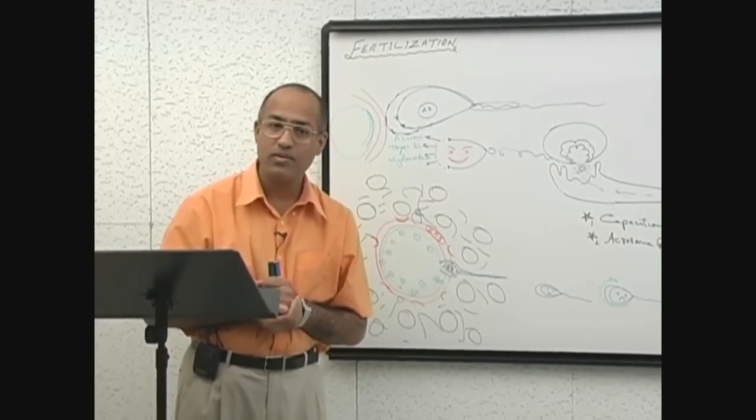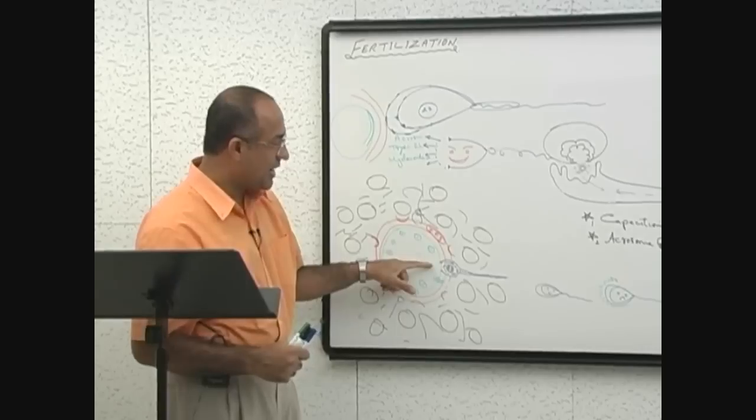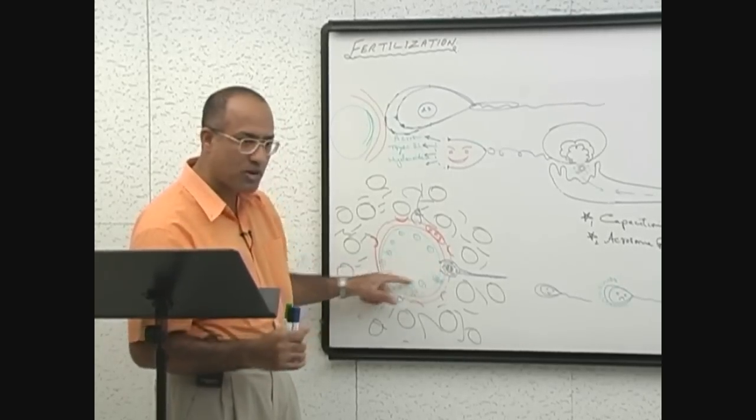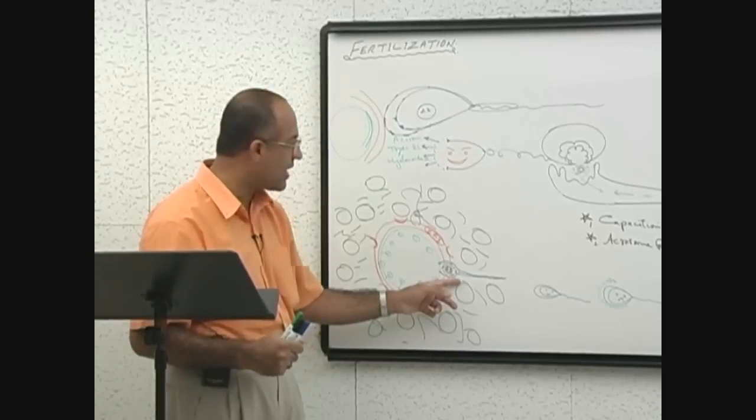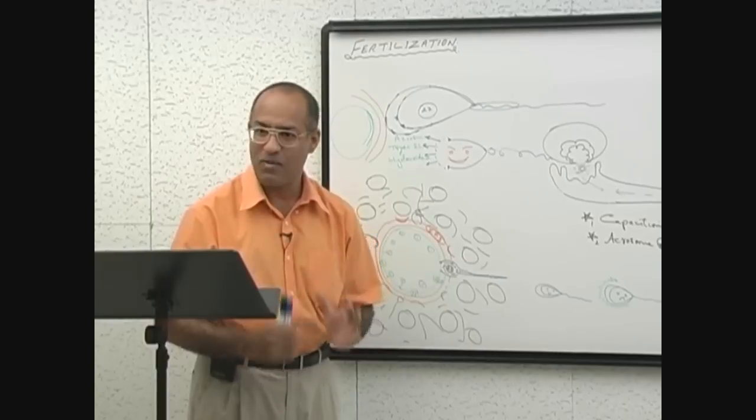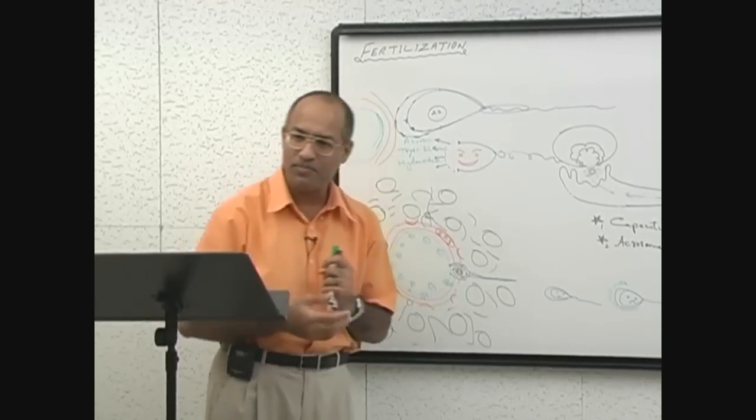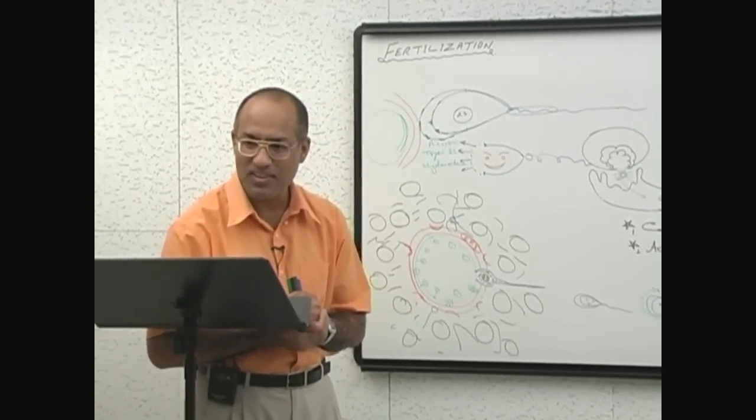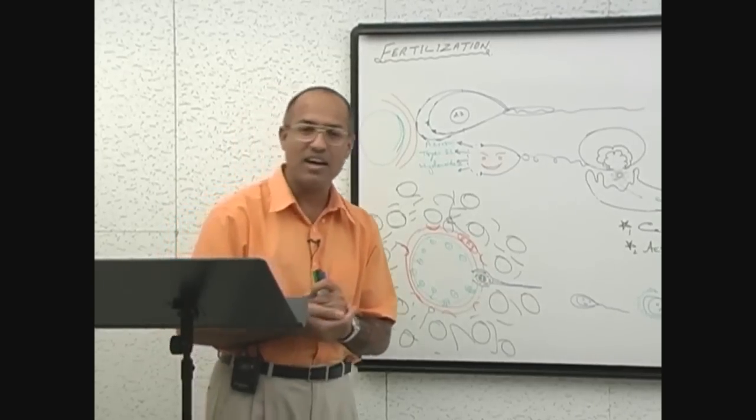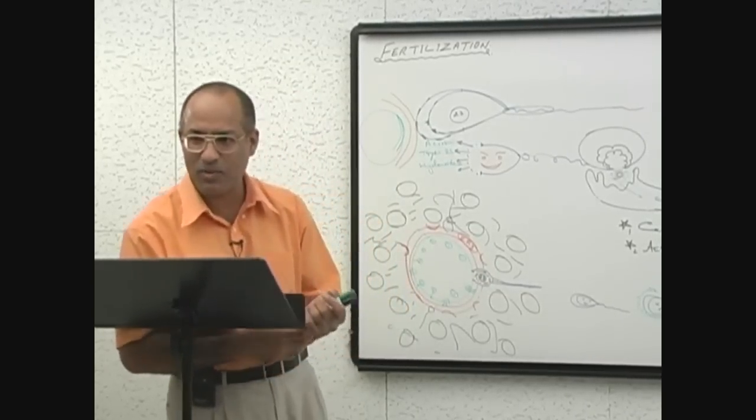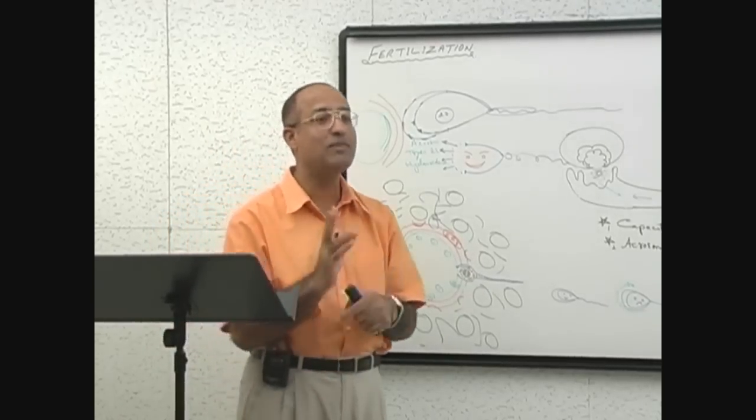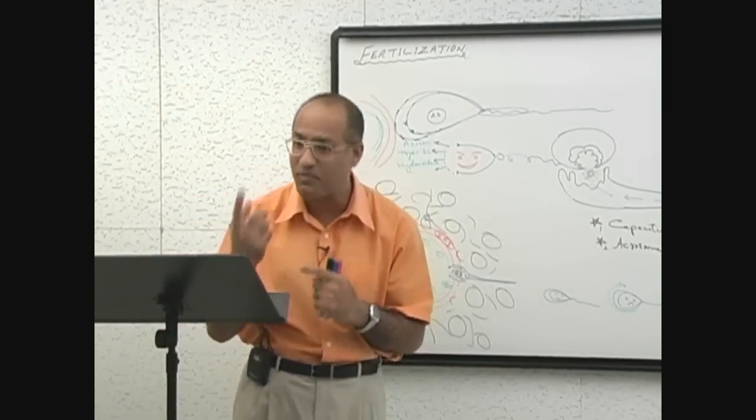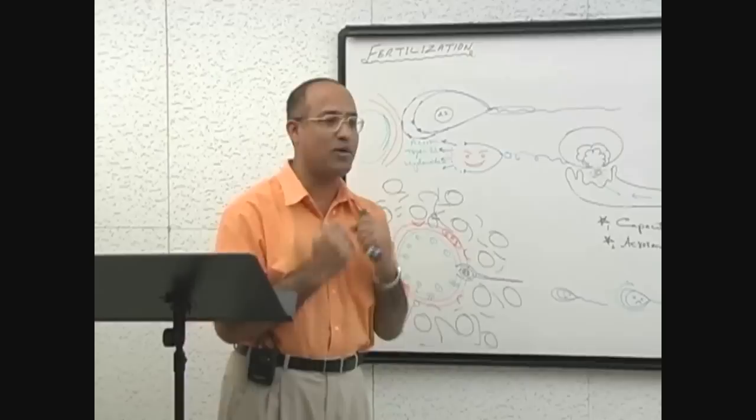The membrane of the sperm touches the membrane of the ovum, cortical reaction occurs, zona reaction occurs. Now it is a private matter between this particular lucky sperm and the ovum. What is the next step? What will sperm do? It doesn't need the tail anymore.